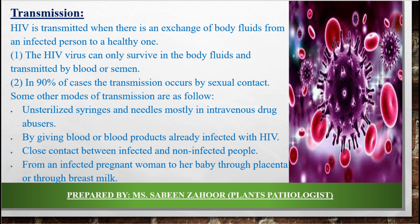Blood and semen can be transferred through sexual contact. In 90% of cases, the transmission occurs by sexual contact. Other modes of transmission include unsterilized syringes and needles, mostly in intravenous drug abusers. Drug users use multiple syringes — blood from one body is used, then another body uses the same syringe. Another mode is by giving blood or blood products already infected by HIV. Blood given for transfusion must be screened so that the donor is confirmed not HIV positive.